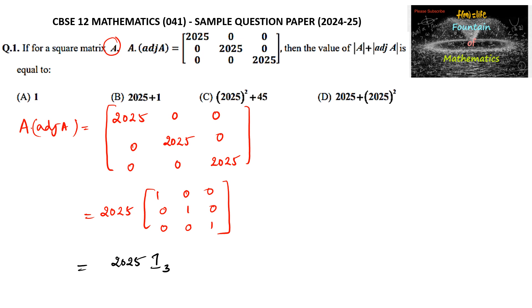So we can consider the matrix A with order 3. We have the property that A into adjoint of A is equal to determinant of A into identity matrix of order N, where N is the order of matrix A. So when comparing, 2025 can be taken as the determinant of A and identity matrix of order 3.